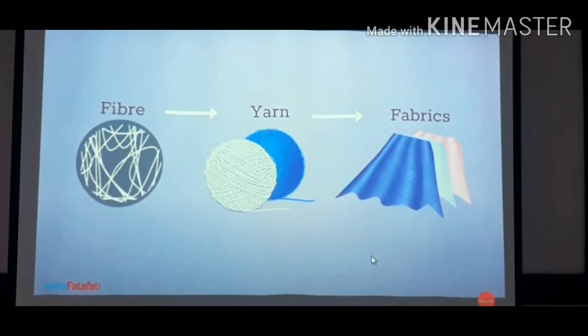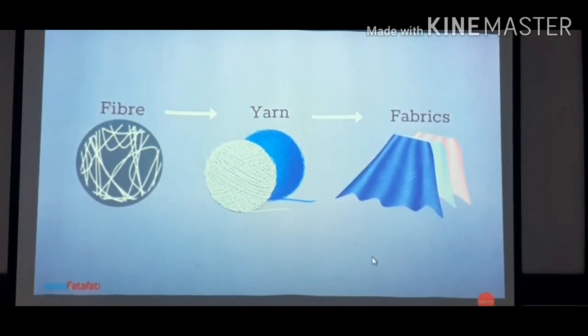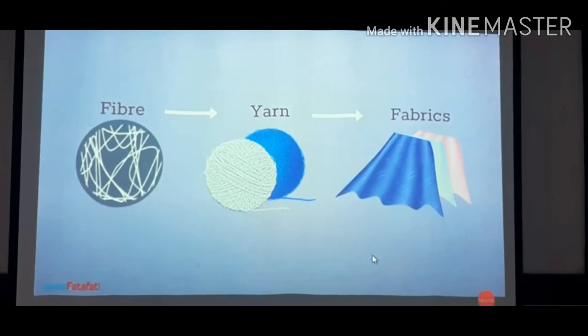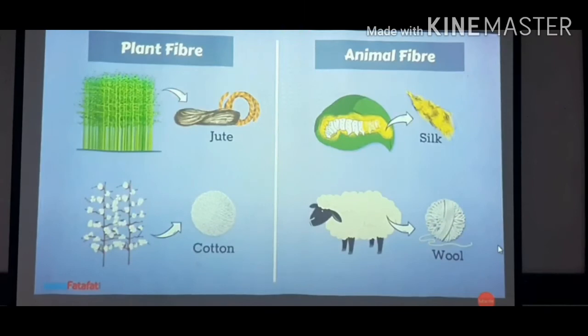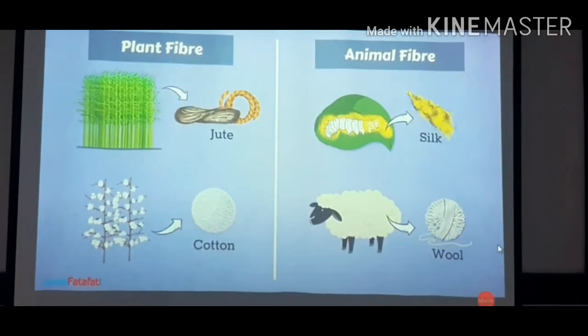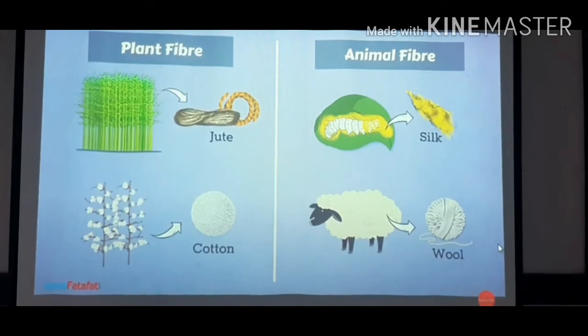Fibers of some fabrics such as cotton, jute, silk and wool are obtained from plants and animals. These are called natural fibers. From plants we get jute and cotton, and from animals we get silk and wool.